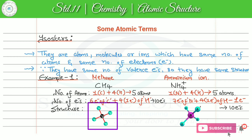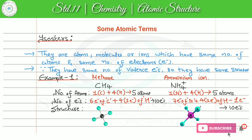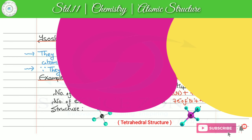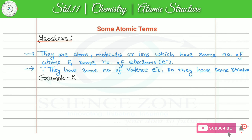And finally, इन दोनों species का structure देख लेते हैं। Methane की case में, carbon जो है hydrogen के साथ combine होके tetrahedral structure बनाता है। Ammonium ion भी same structure बनाता है — यहां nitrogen जो है central element होता है, बाकि तीन hydrogen atoms normal bond से connected हैं और एक hydrogen coordinate covalent bond से connected है, और इस species पे plus one charge है। दोनों species का structure tetrahedral है।